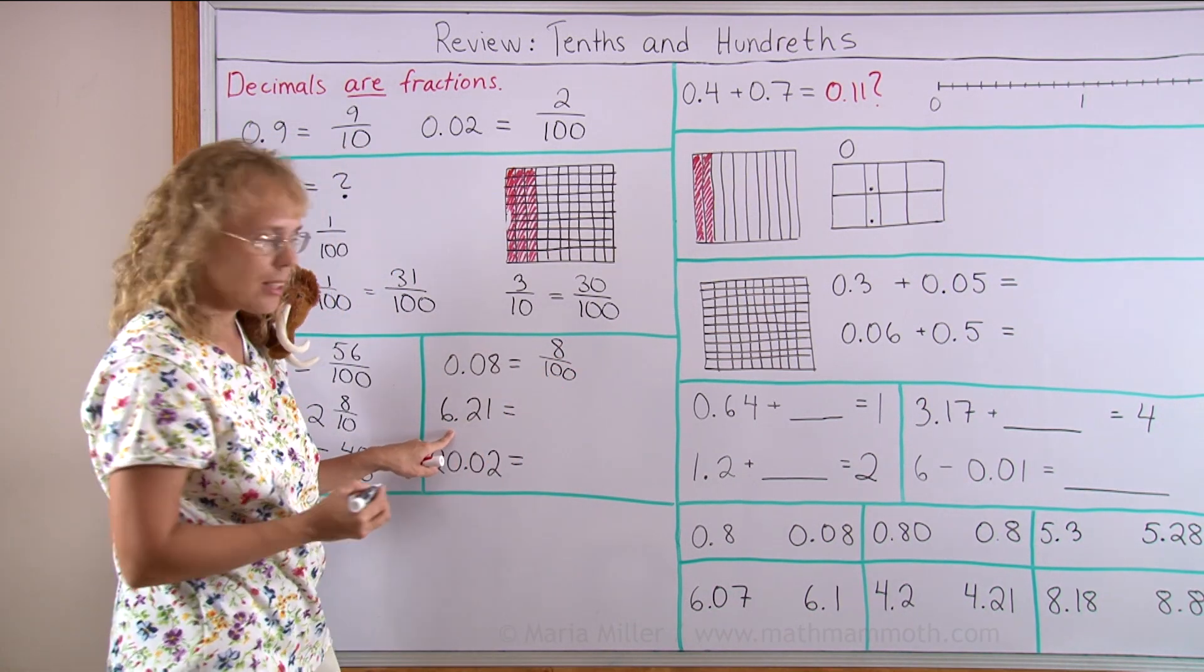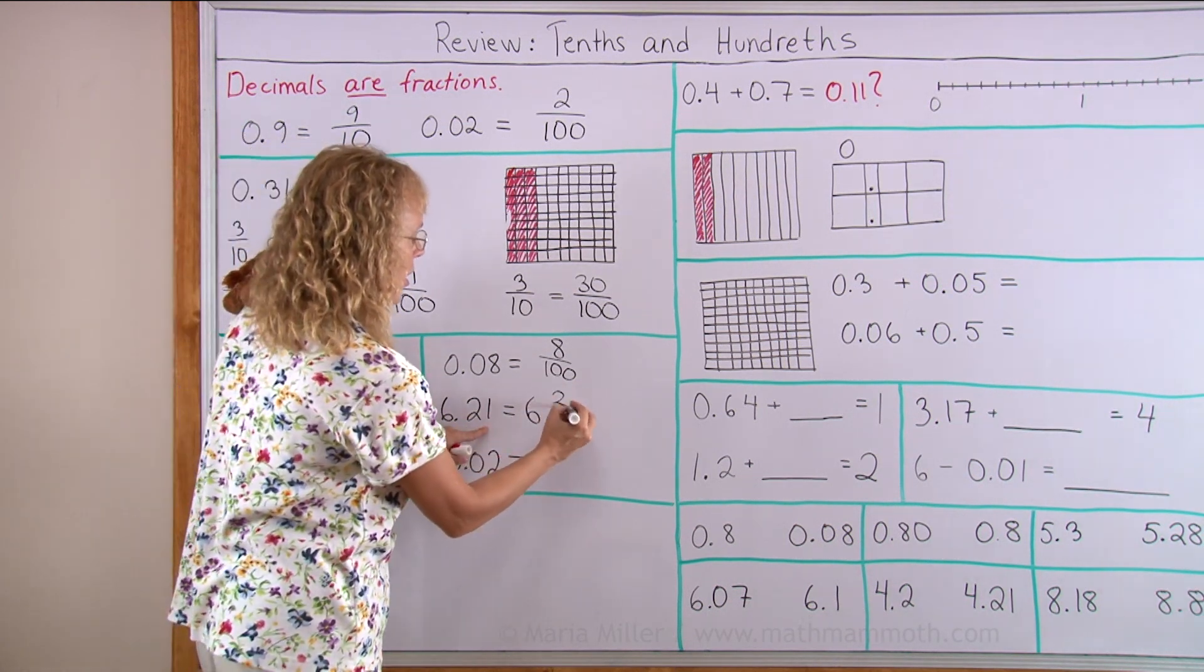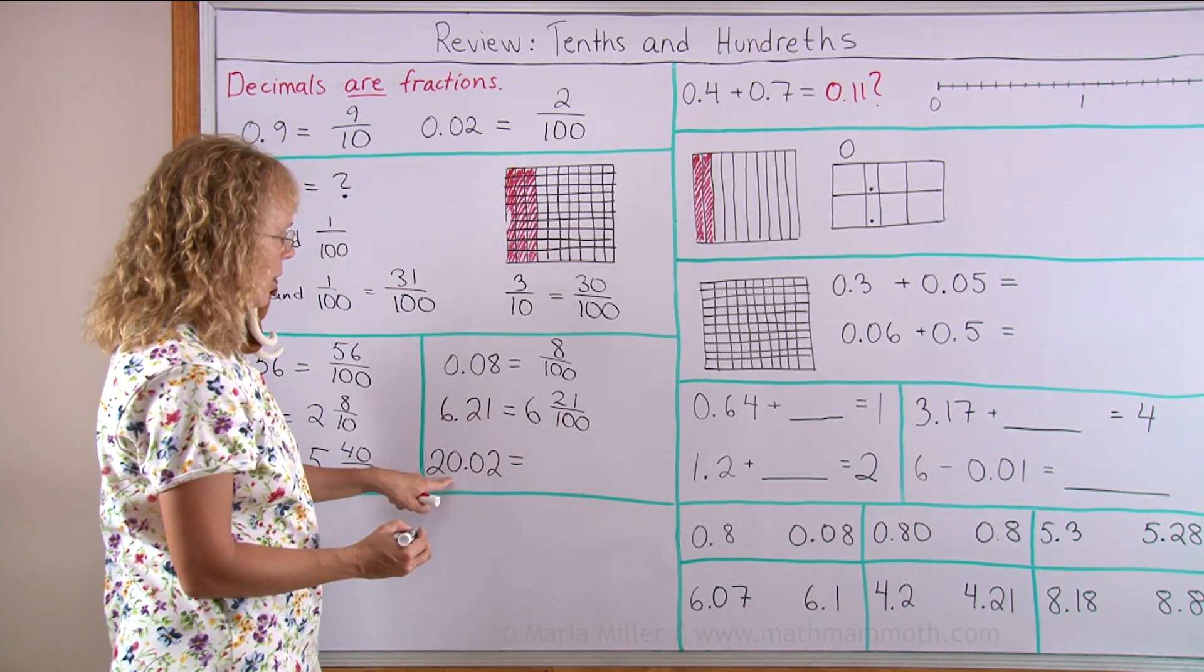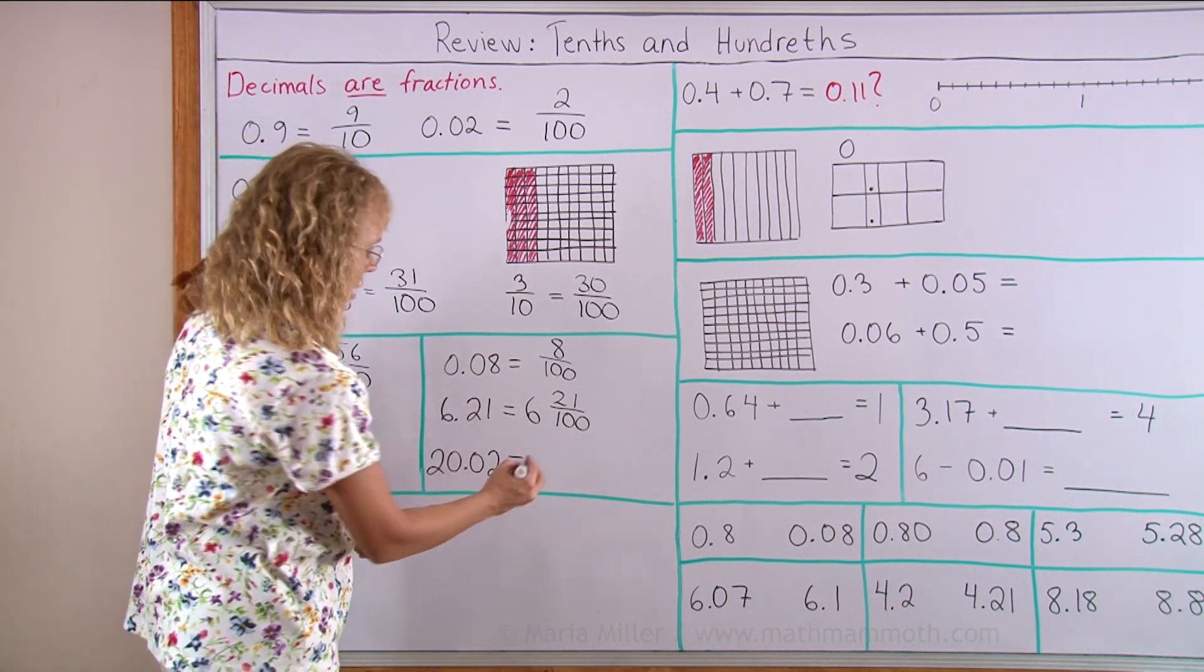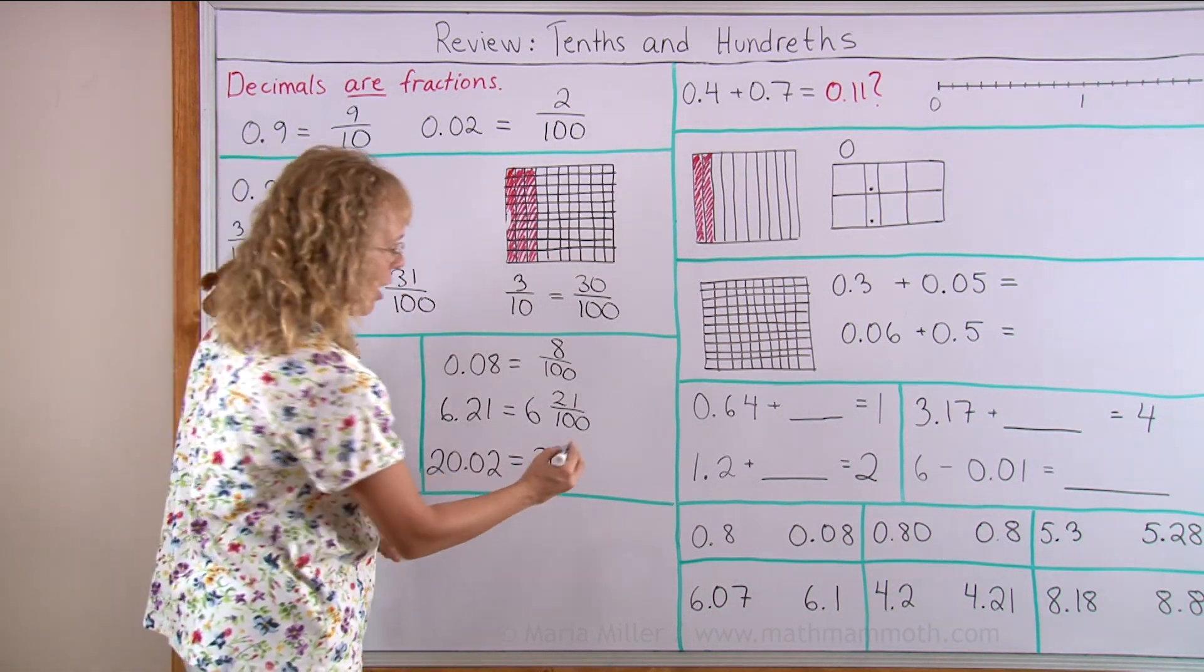This here as a fraction, 8 hundredths. This as a mixed number, 6 and 21 hundredths because there's 2 decimal digits. And here we have 20.02, as a mixed number, 20 and 2 hundredths.